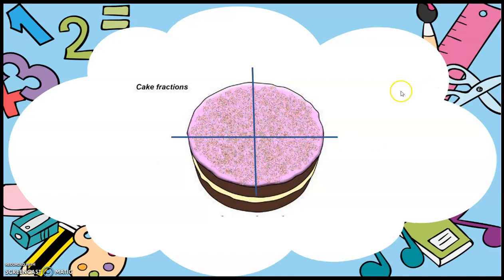Now, I am dividing this cake into 4 equal parts. How many parts? 4. 1, 2, 3 and 4. These are 4 parts. When I get 4 parts of any object, we call it quarters. What we call is quarters.